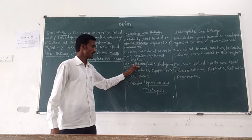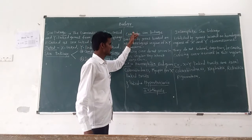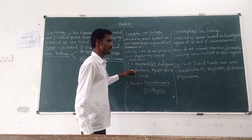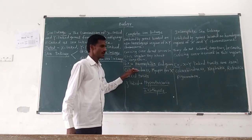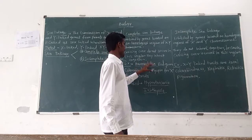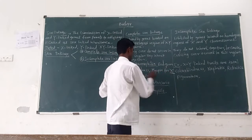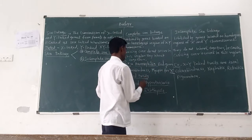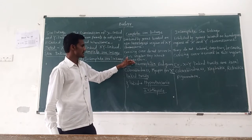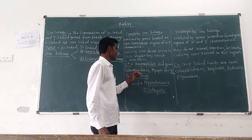Hemophilia is a common example of complete sex linkage. Other examples include red-green color blindness and myopia. These diseases are caused by X-linked traits and are common examples of sex-linked traits.